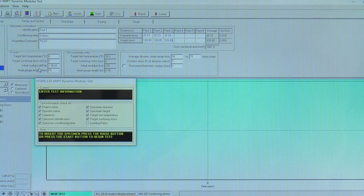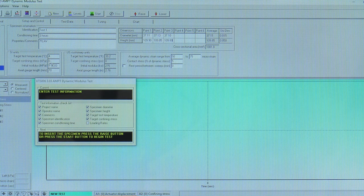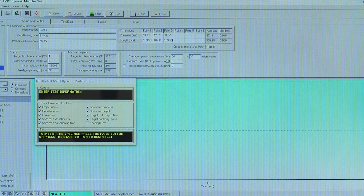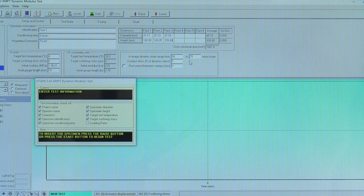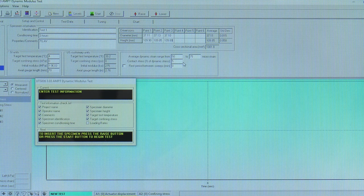The initial modulus should be representative of the region's typical values of asphalt mixture use at test temperature. Verify the average dynamic strain range is between 50 and 75 microstrain and the contact stress is five percent.